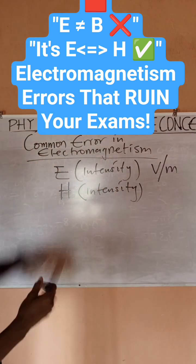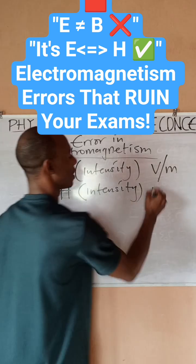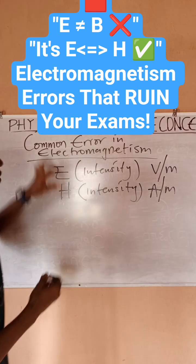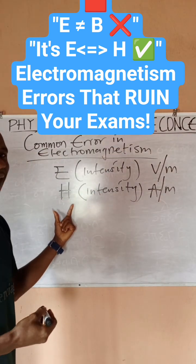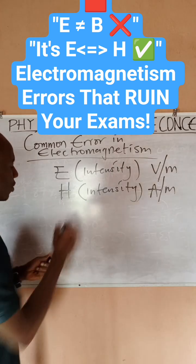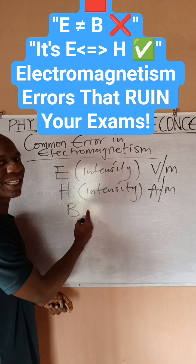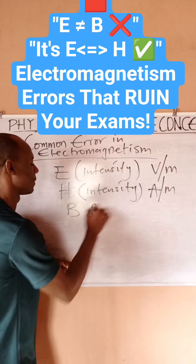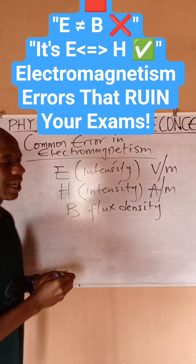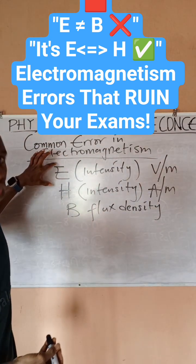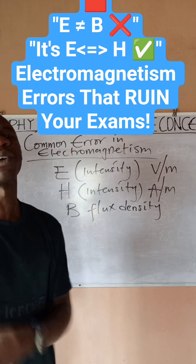The exact equivalent of E in the magnetic field is H, not B, and the unit of H is amperes per meter. So if E represents electric field intensity, H represents magnetic field intensity. Take note: B is not magnetic field intensity — B is magnetic flux density. Thanks for watching. This is Prime Concept.